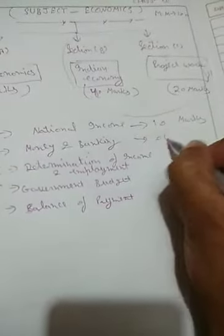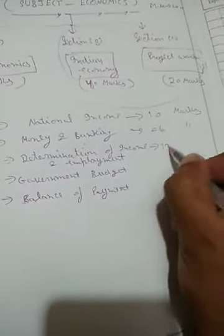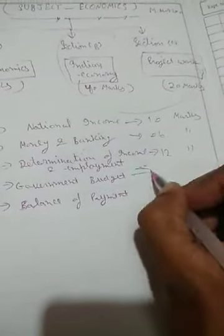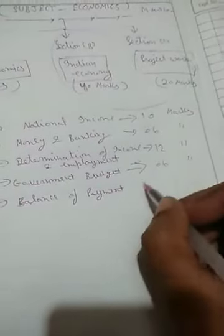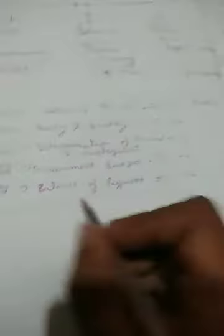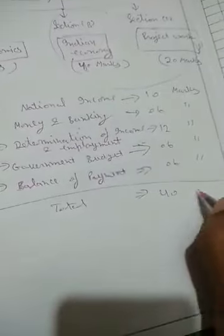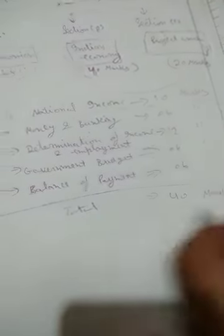This is 6 marks unit. This is 12 because it is very, very important. This is Government Budget, also 6 marks. And Balance of Payment is also 6 marks. Total, how much? 40 marks. The total Macroeconomics.